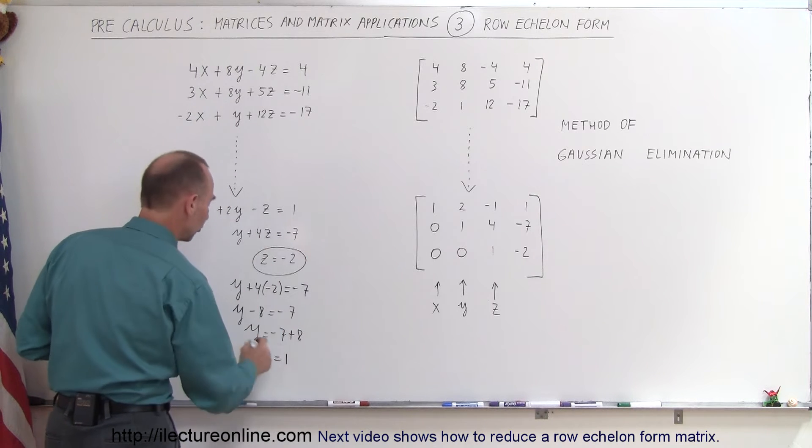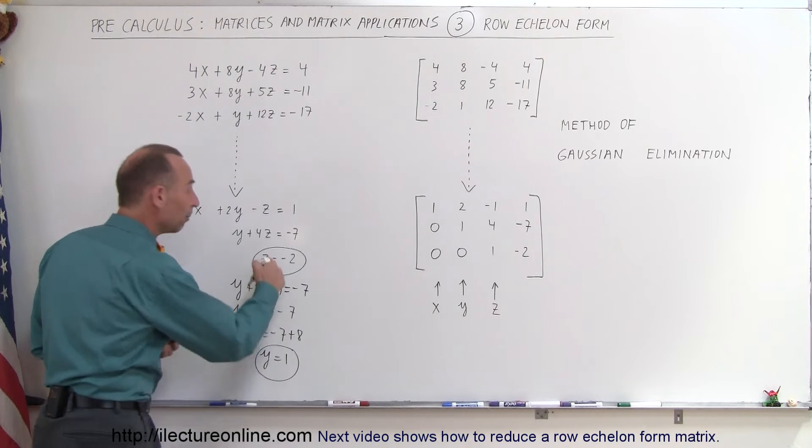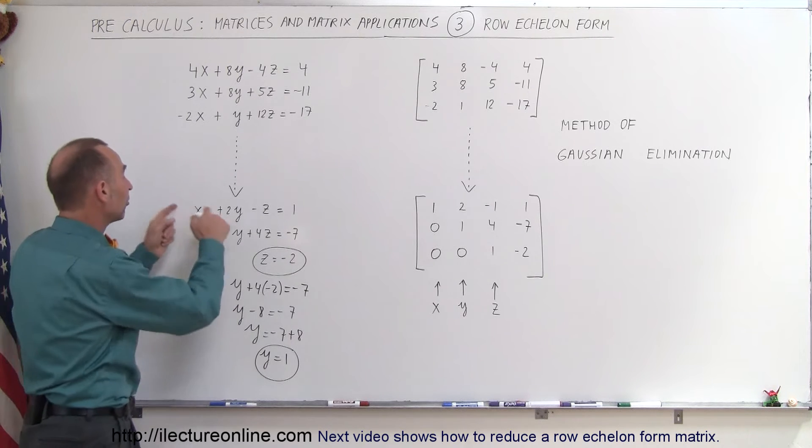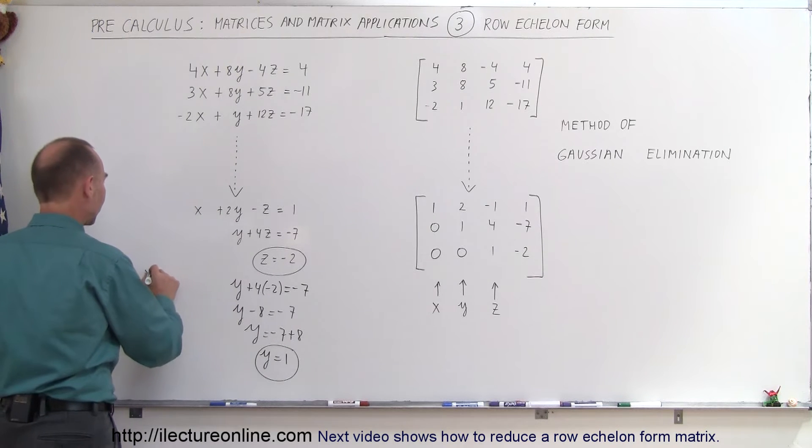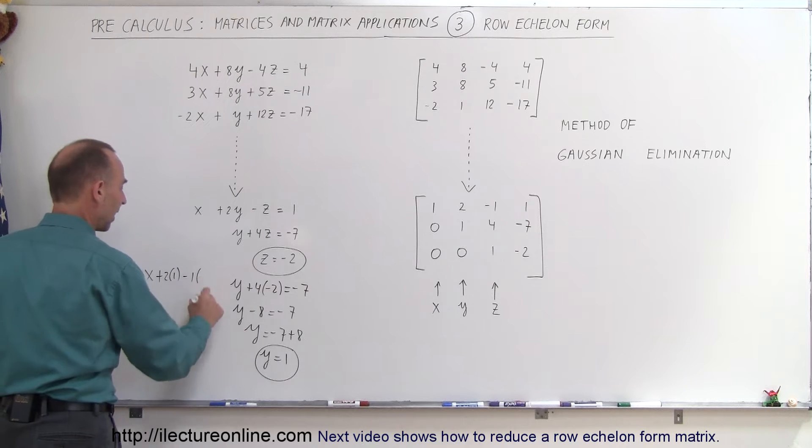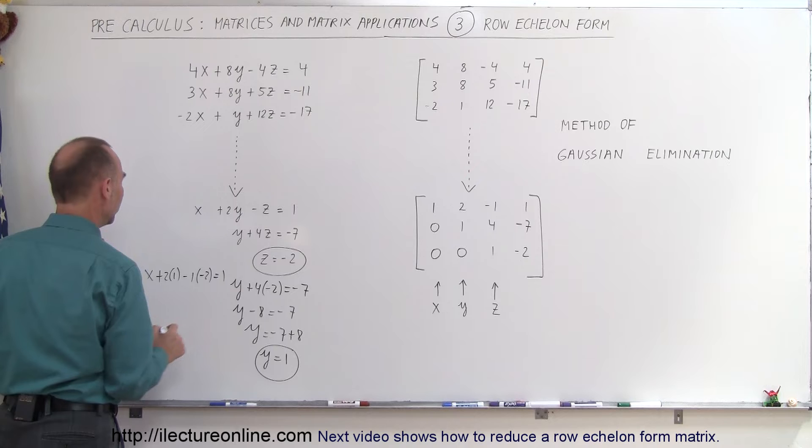So we now have z equals negative 2, we have y equals 1. Plug in those two values in the first equation.